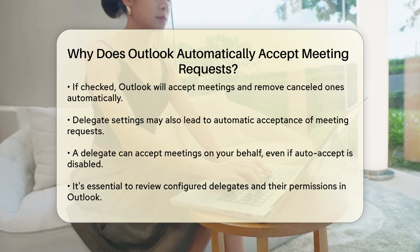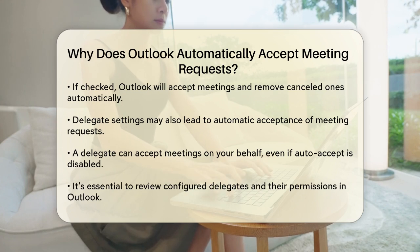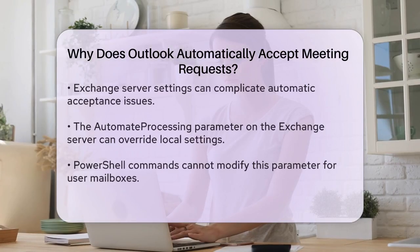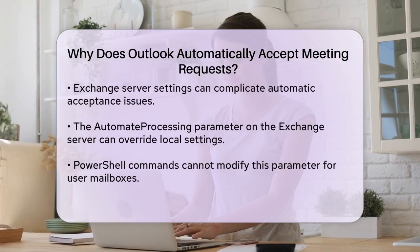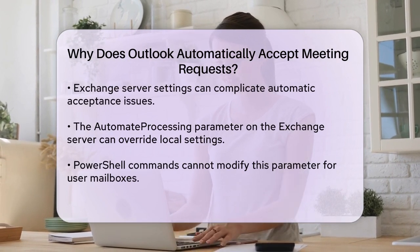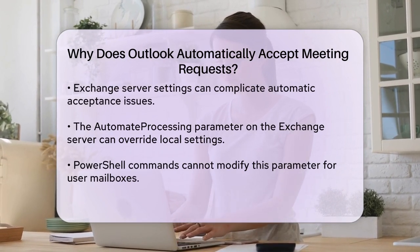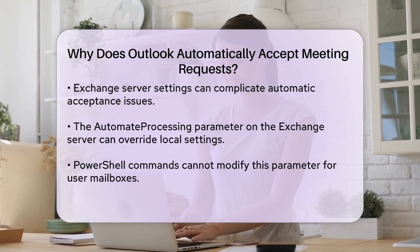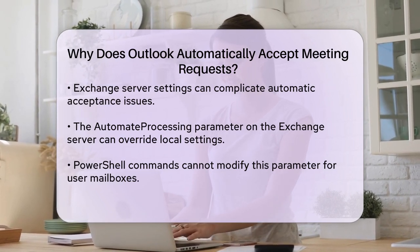It's important to check if any delegates are configured in your Outlook settings and ensure that their permissions are correctly set. In some cases, the issue might be more complex, involving Exchange Server settings. For example, if the AutomateProcessing parameter is enabled on the Exchange Server, it can override local Outlook settings and cause meetings to be accepted automatically. However, for user mailboxes, you cannot use PowerShell commands to modify this parameter, so you need to check the Outlook client settings directly.